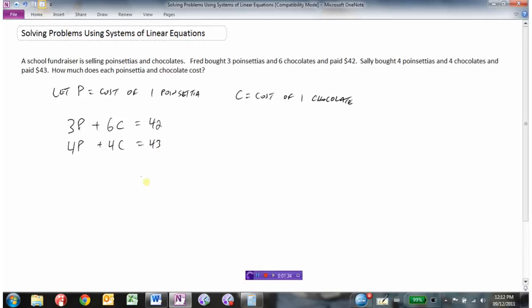So we've got a system of equations and we're looking for the P and C that would make these two equal. We've got three ways to solve this system: one way is graphing, a second way is substitution, and a third way is elimination.